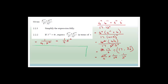Then it says 2.2.2: if 3^(−x) = 4t, express the previous expression in terms of t. We already know the expression equals ¼ × 3^(−x). Since 3^(−x) = 4t, we substitute: ¼ × 4t. The 4s cancel and the answer is t. Nice question — I like that a lot.